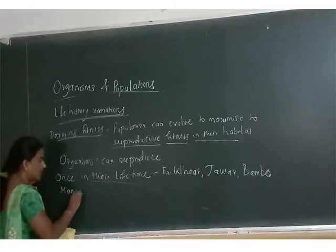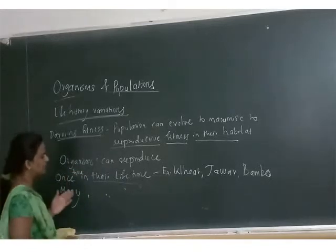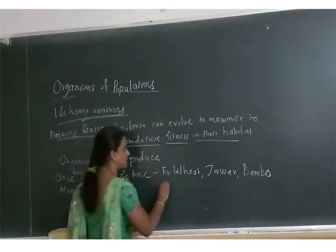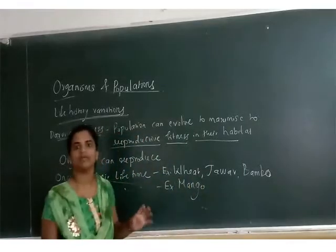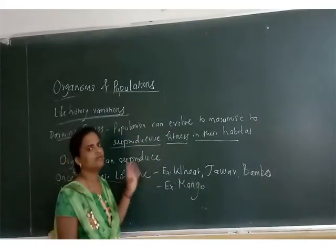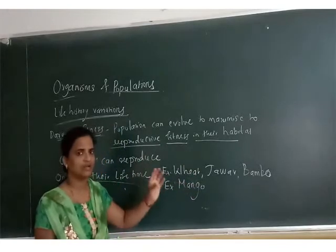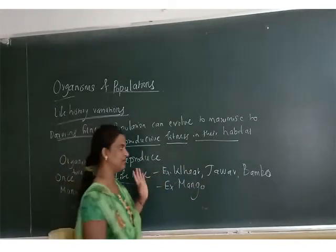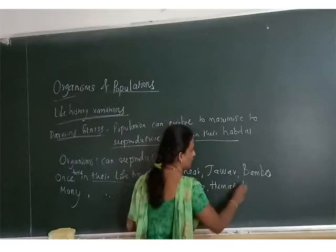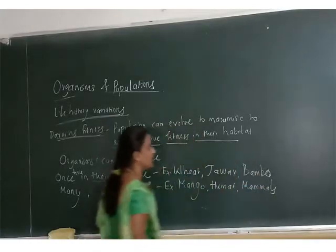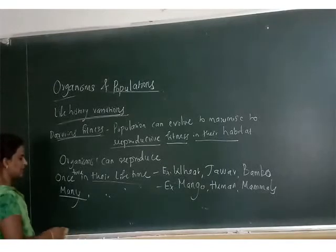Some organisms can reproduce many times in their lifetime. For example, mango can give fruits every summer season - flowering and fertilization take place regularly each season, giving fruit every season. Human beings and almost all mammals also reproduce many times, in different configurations.